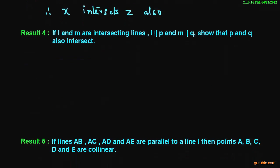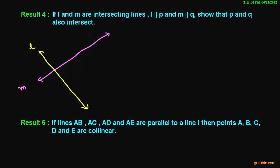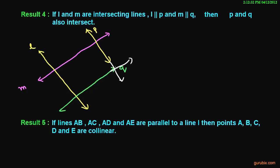Now result number four: if L and M are intersecting lines, suppose we have line M intersected by line L, and L is parallel to P, and M is parallel to Q, then P and Q will also intersect. You can see here if we extend these two lines, they will intersect. This is result number 4.